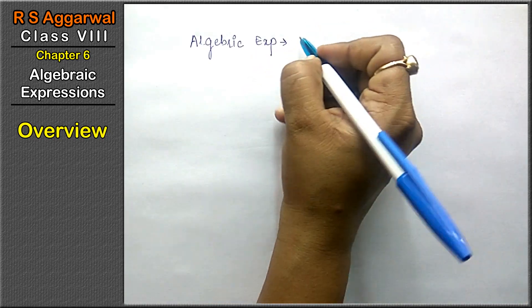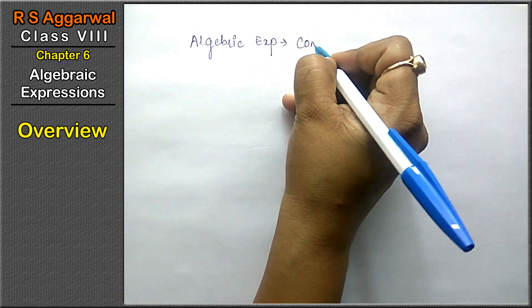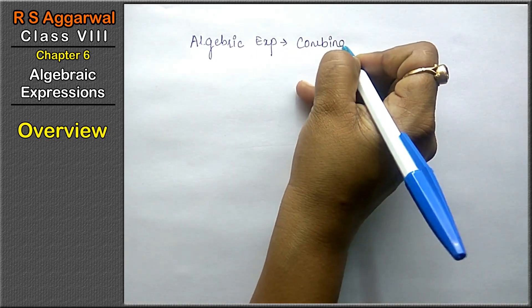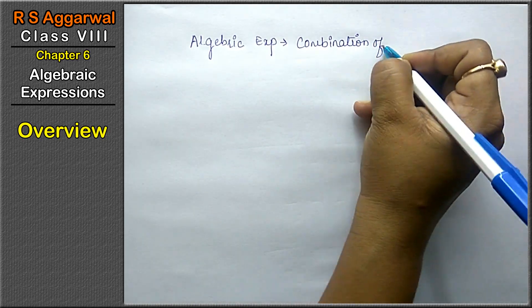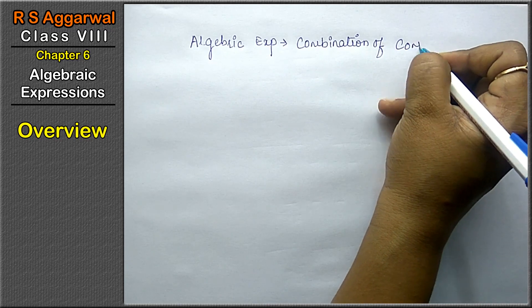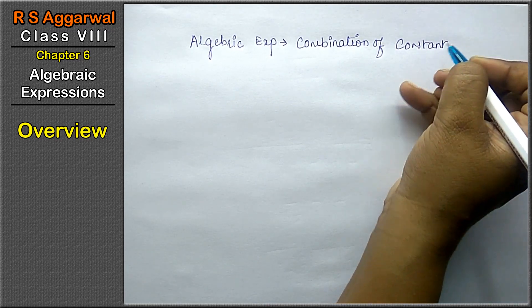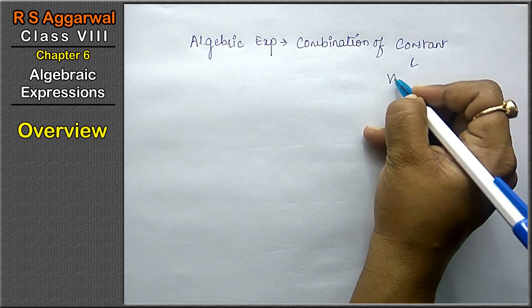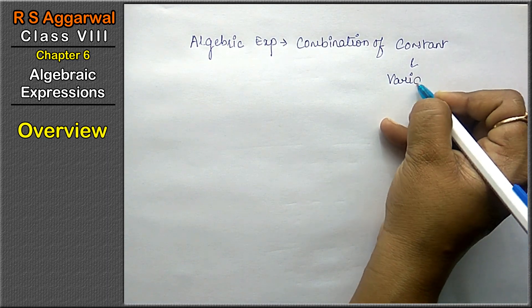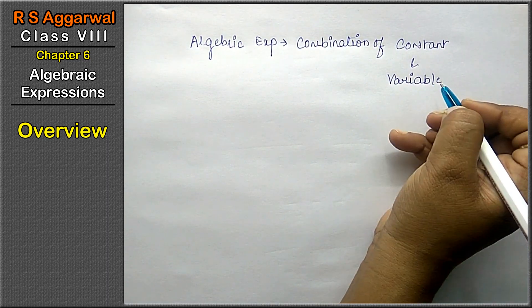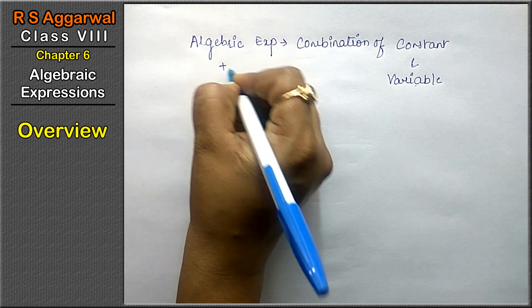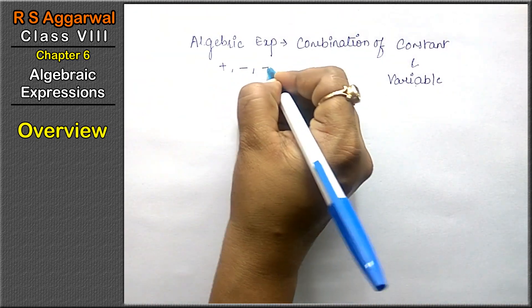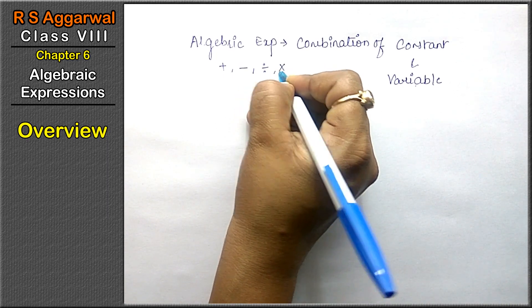What is algebraic expression? Friends, algebraic expression is a combination of constant and variables. Which signs are included? Plus, minus, divide and multiply.